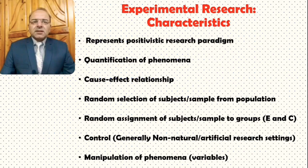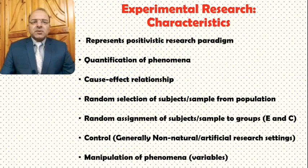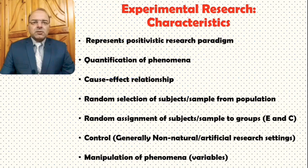Another characteristic of experimental research is that it is aimed at establishing the cause and effect relationship. Random selection of subjects or a sample from the population is also one of its characteristics. Besides random selection, random assignment of subjects or members of the sample to groups — that is, to the experimental group and to the control group — is another characteristic of experimental research.